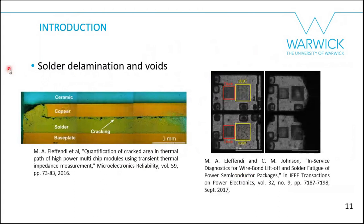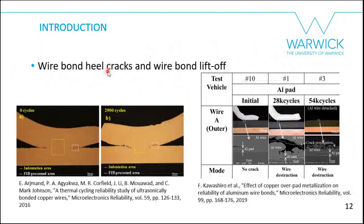Regarding solder, the failure mechanisms are solder delamination and voids. You can see cracks on the DBC-to-base-plate solder attachment in figures, and using scanning acoustic microscopy or X-ray you can also see voids on the substrate and in the solder below the chips. For wire bonds, the typical failure mechanisms are heel cracks and wire bond lift-off.